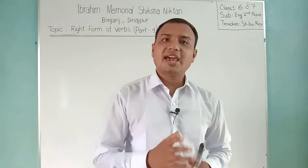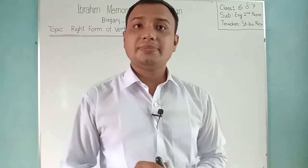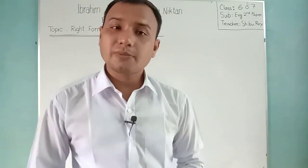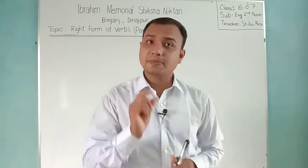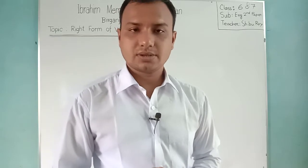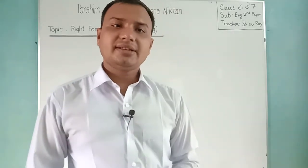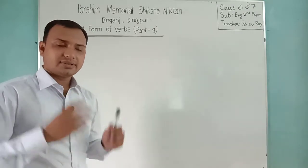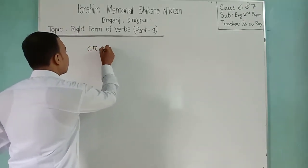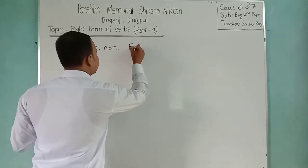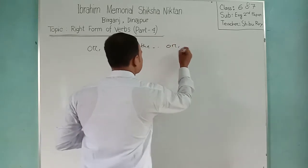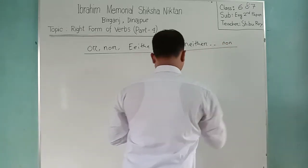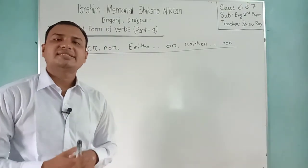And if we find that after a modal auxiliary verb there is 'be' — that means can be, may be, shall be — what will be the form? The verb will be in the form of V3 — that means past participle. Hope you understand my previous three classes. Now I am taking class number 4. In class number 4, we will learn the rules of or, nor, either/or, and neither/nor. We will learn about the uses of those words in a sentence.